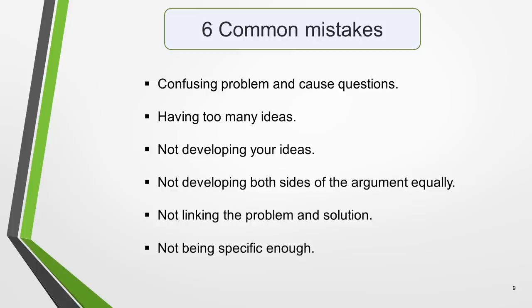There are six common errors in problem-solution essays: confusing problem and causes questions, having too many ideas, not developing your ideas, not developing both sides of the argument equally, not linking the problem and the solution, and not being specific enough. It's common for an essay to consist of a list of problems and solutions without any of them being expanded on or linked to each other. Sometimes a student will focus on just the problem or only the solution, which leads to an unbalanced essay. Both of these issues will result in a low score for task achievement. You must choose just one or two problems and pick solutions directly related to them. Explain them and give examples. Another serious error is to write generally about the topic — you need to be very specific with your ideas.